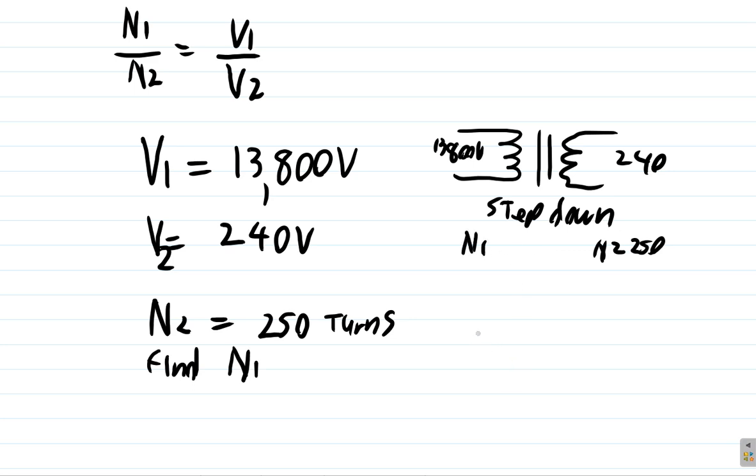Now again, the number of turns on the primary, N1, over N2, the number of turns on the secondary, is equal to V1 over V2. Remember, the ratio is math, so N2 over N1 equals V2 over V1 could also be used.